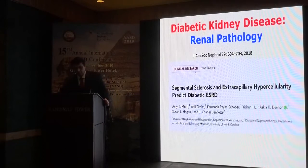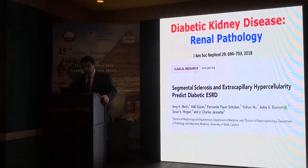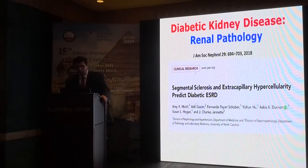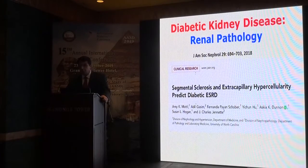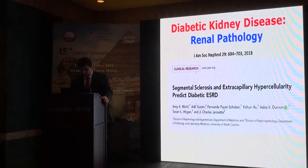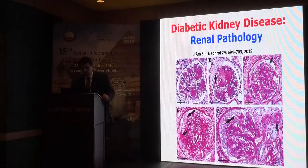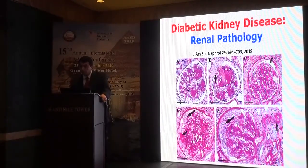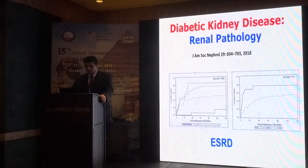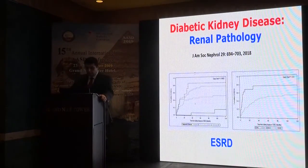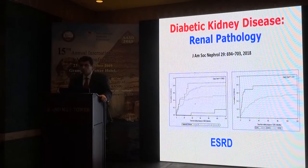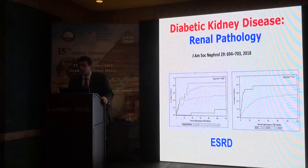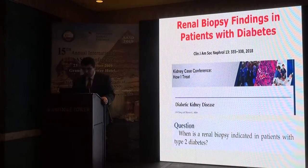Regarding pathology: a JASN 2018 publication found that segmental sclerosis and extracapillary hypercellularity predict progression to diabetic end-stage kidney disease. In pathological findings, glomerular sclerosis and mesangial proliferation were identified as strong predictors. If a high percentage of glomerular sclerosis is found from the start, this is a very strong predictor of rapid progression to end-stage kidney disease. Extracapillary hypercellularity, especially mesangial proliferation, is also a strong predictor toward end-stage kidney disease.